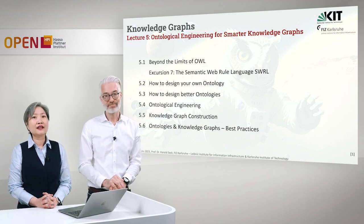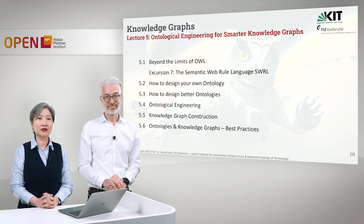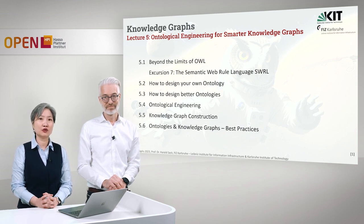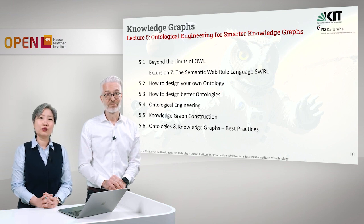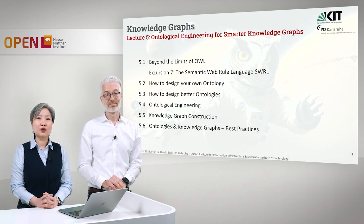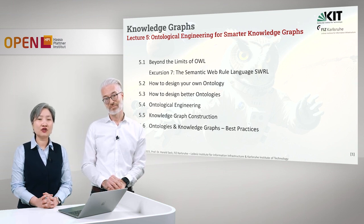Recall also our DIKW pyramid from knowledge management. For us to be able to move up from information to knowledge, we have to infuse our information with semantics. In order to do this, we need an ontology. And in section 5.2, we will tell you how to design your own ontology and the methodologies that we use to do this.